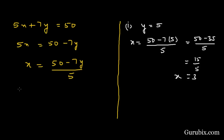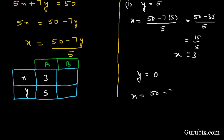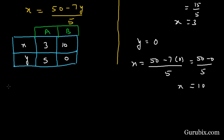We draw a table with two rows and three columns containing x and y values. When y = 5, x = 3 — we denote this point A with coordinates (3, 5). For the second point, we put y = 0. Then x = (50 − 7×0) / 5 = 50 / 5 = 10. So when y = 0, x = 10 — we denote this point B with coordinates (10, 0).